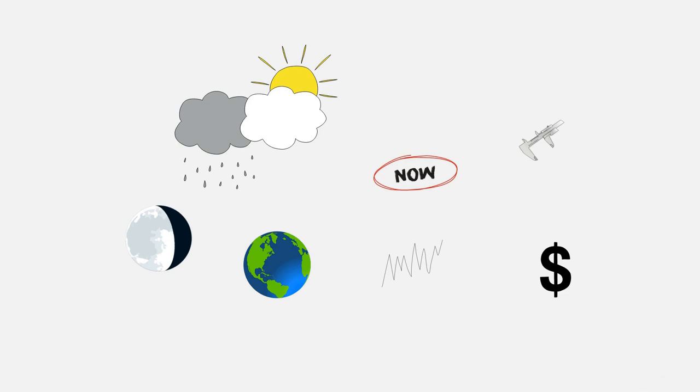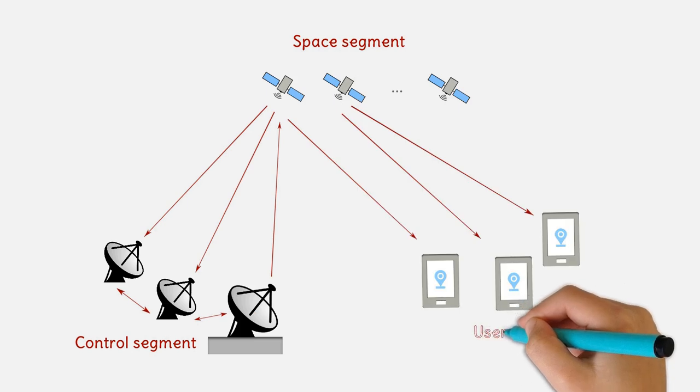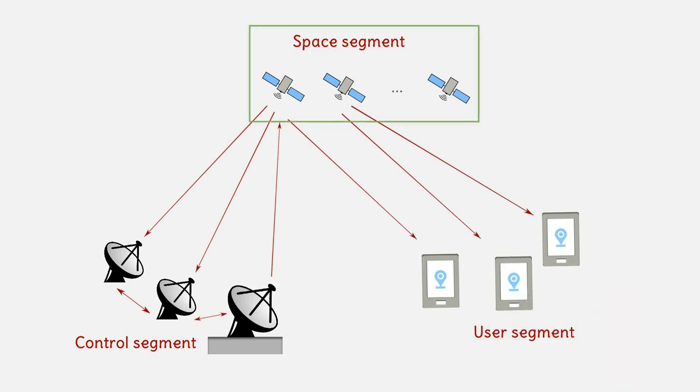Each navigation system is comprised of three different segments: the space segment, the control segment and the user segment. The space segment consists of the satellites that fly in accurate orbits around the earth.